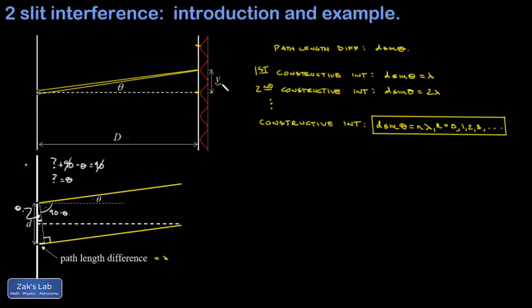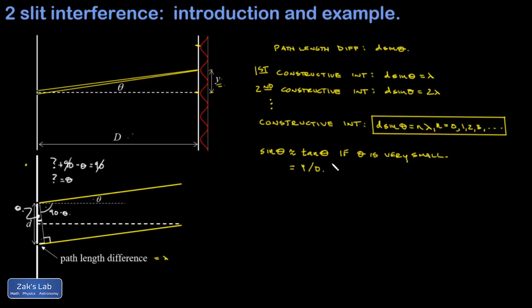There's a useful modification especially convenient in the lab: instead of measuring angles, you normally measure y, the distance between the central interference maximum and the first one off center — also equal to the spacing between any two adjacent maxima. Using the small-angle approximation sinθ ≈ tanθ (valid here since we're dealing with fractions of a degree), and noting that tanθ = y/D from the diagram, we can re-express the formula directly in terms of y, giving something more practical for lab measurements.